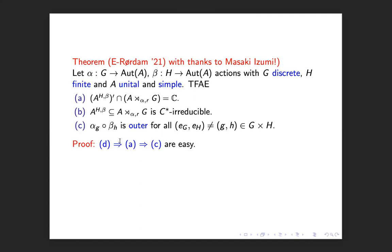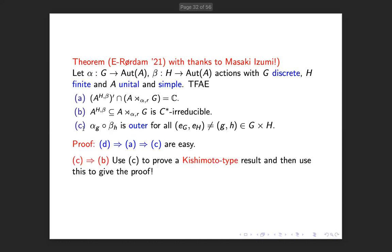Let's go into the proof. B implies A we already know in general. A implies C is easy — a similar argument as for cross products, which I won't detail. The interesting step is C implies B. We want to use condition C to prove a Kishimoto-type result in this situation, and then use it to prove C*-irreducibility.